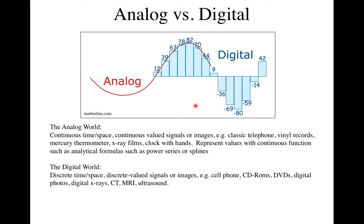These discrete values are samples of that signal, used in digital audio recording and in digital images. For a camera, brightness as a function of position is given as a number. A waveform of a sound wave, instead of a continuous signal, is given as a set of integer values. When you want to transmit that information it's very convenient because all you have to do is transmit these values and then reconstruct the signal.